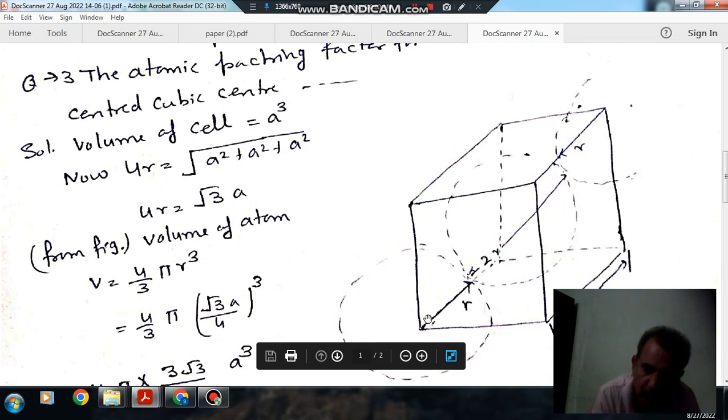This body diagonal makes four R. And it is equal to A square plus A square plus A square root. So four R will be equal to root three A.